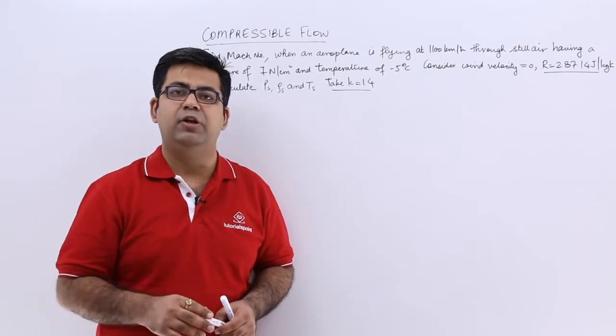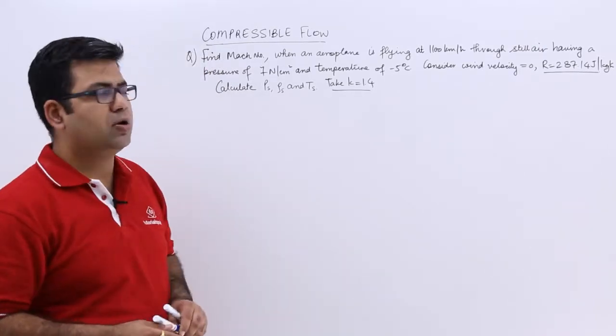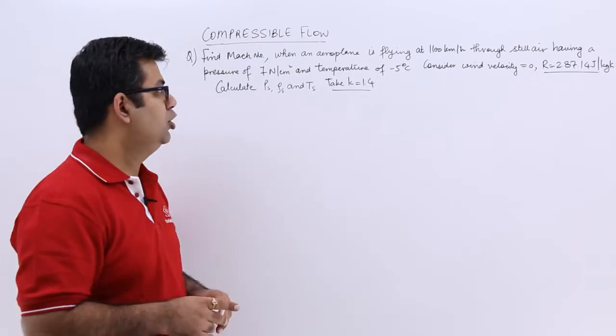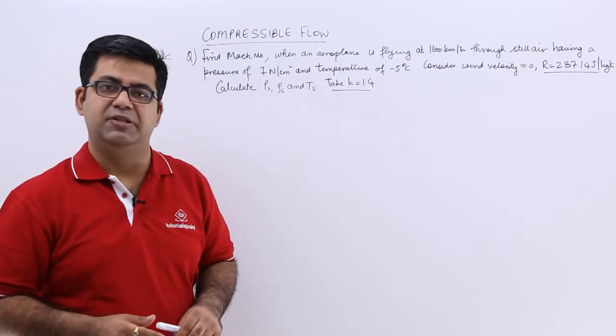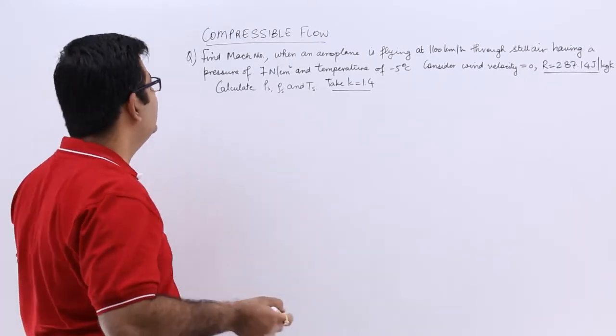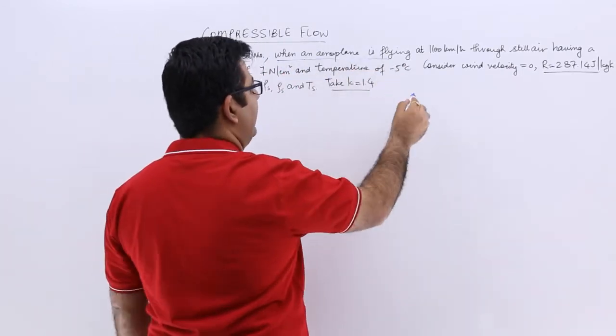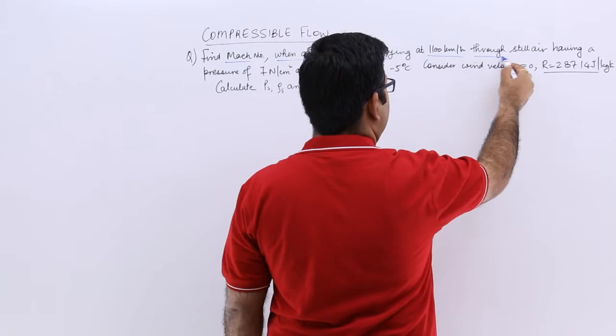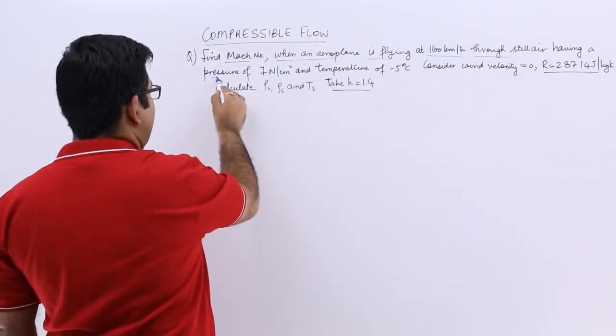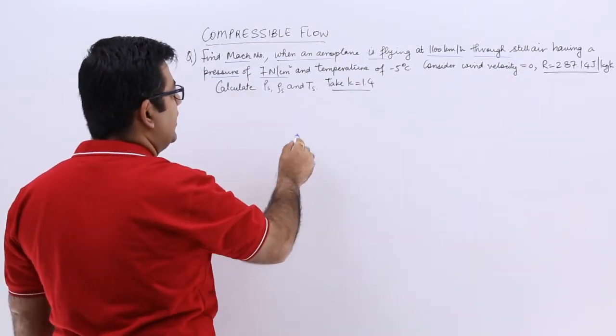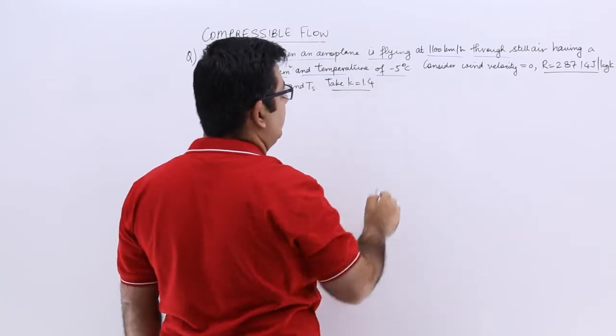Now let's come to the last video of this particular chapter and talk about a simple question on the topic of stagnation properties. The question says find the Mach number when an aeroplane is flying at 1100 kmph through still air having a pressure of 7 N per cm² and temperature of minus 5 degree Celsius.